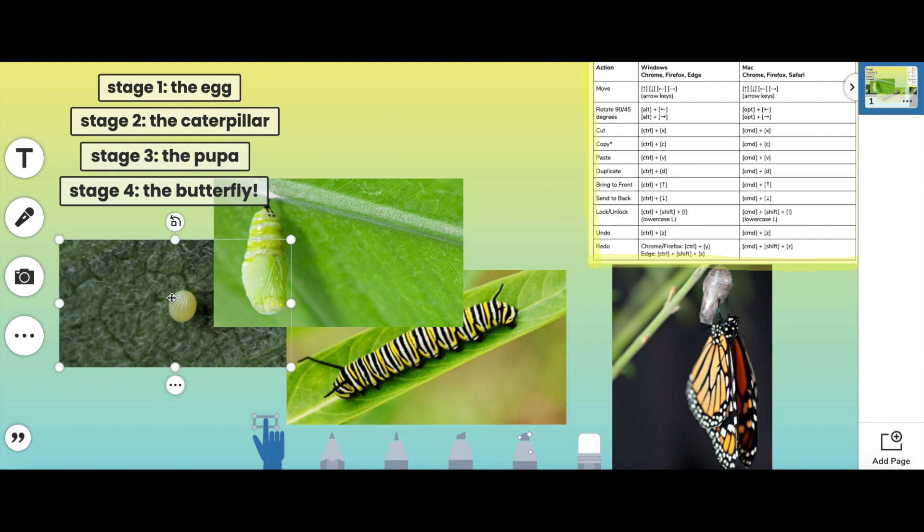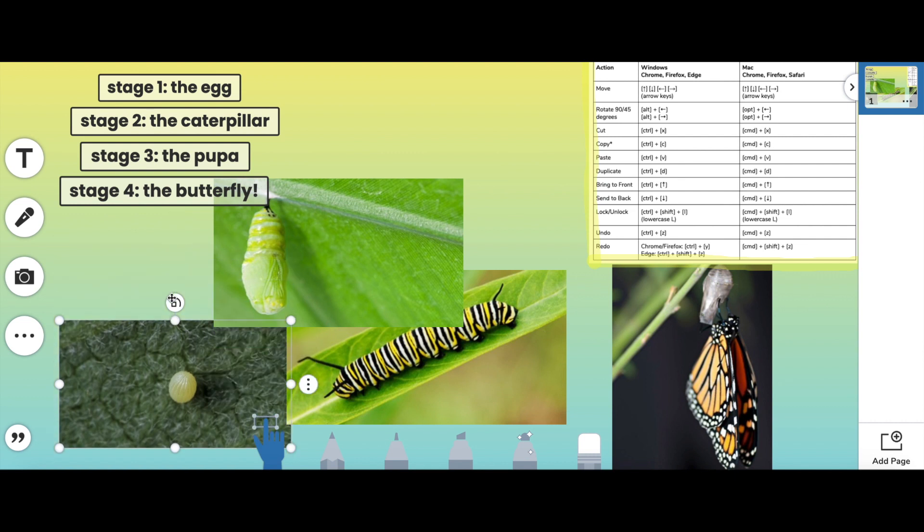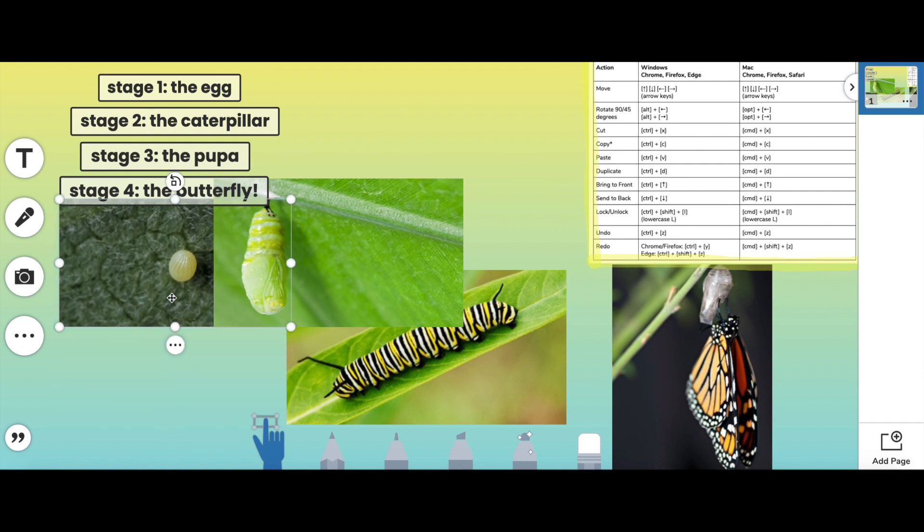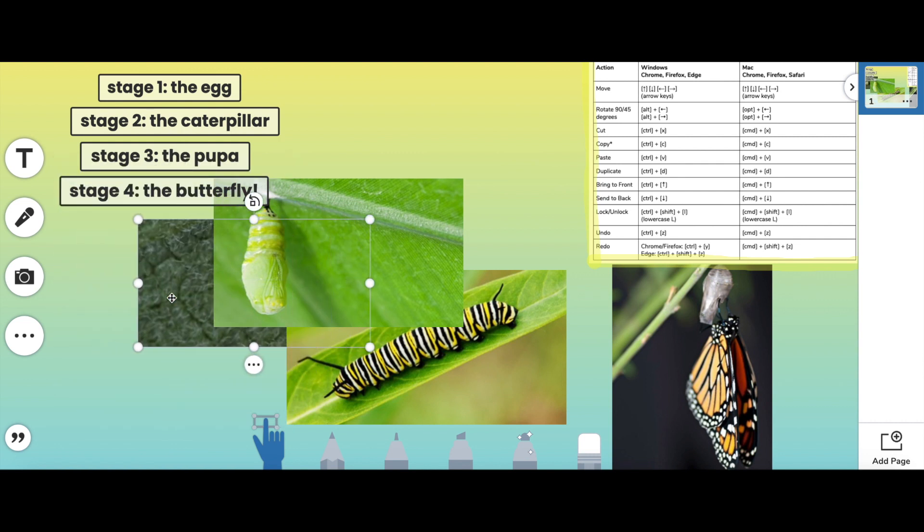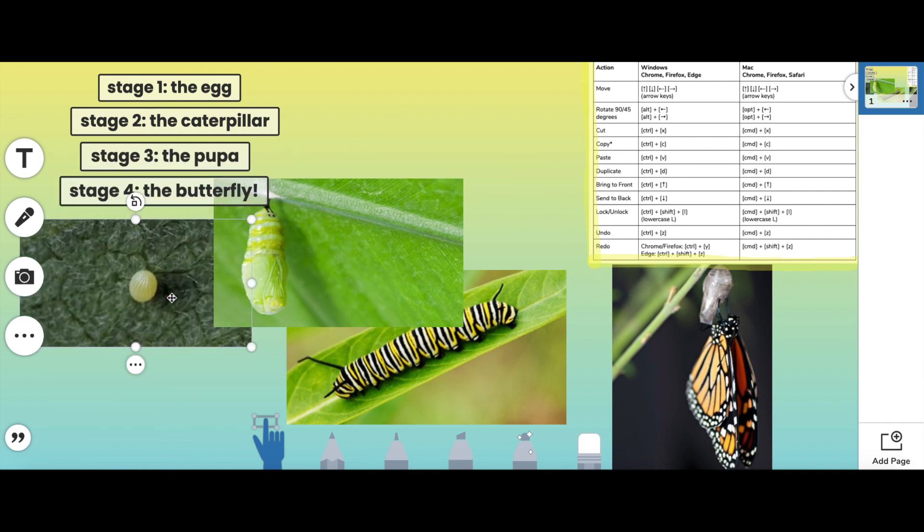I'm going to select it and then I just want to move this down. All I'm doing is tapping an arrow key on my keyboard. I'm not using my finger on the canvas at all. I'm just tapping this arrow key and I can move it up, down, to the right, to the left. I'm going to move this down.